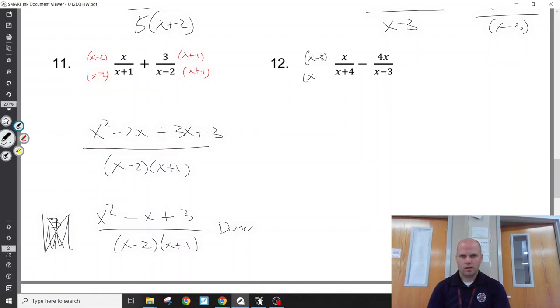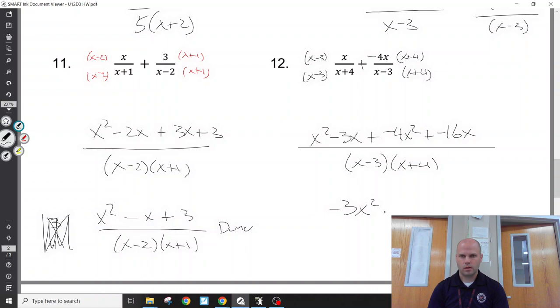Here, x minus 3, x plus 4. Distributing, I get x squared minus 3x. I'm going to distribute the negative. So I get negative 4x squared and negative 16x. x minus 3x plus 4 is the common denominator. Giving me negative 3x squared minus 19x. Could pull out an x, maybe a negative 1 if I wanted to. There's no other numbers I could pull out. Look to simplify if it was possible.